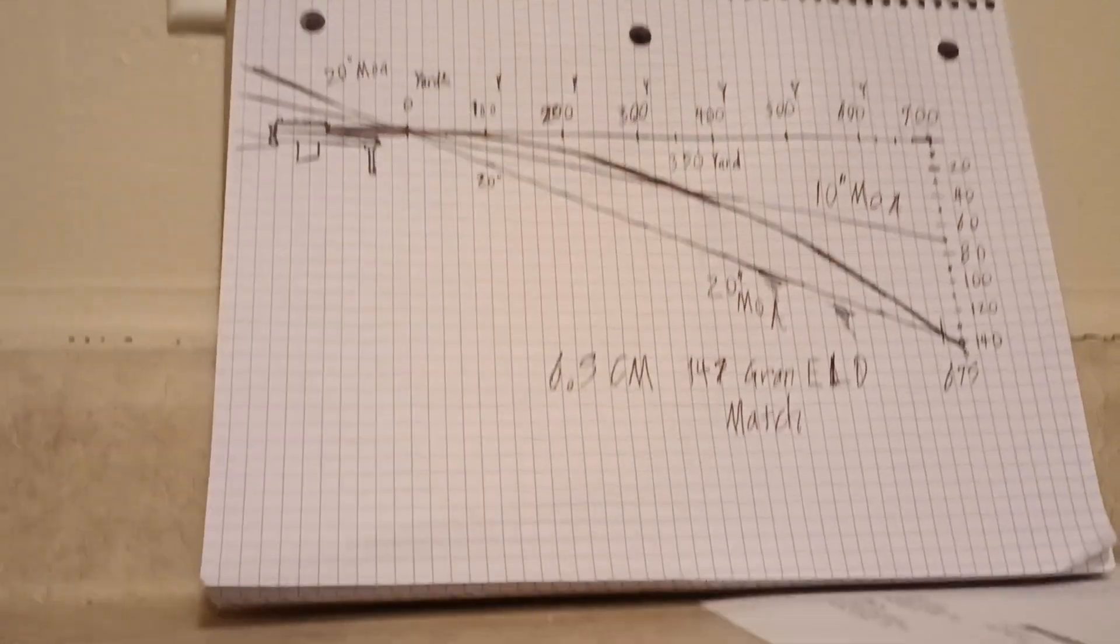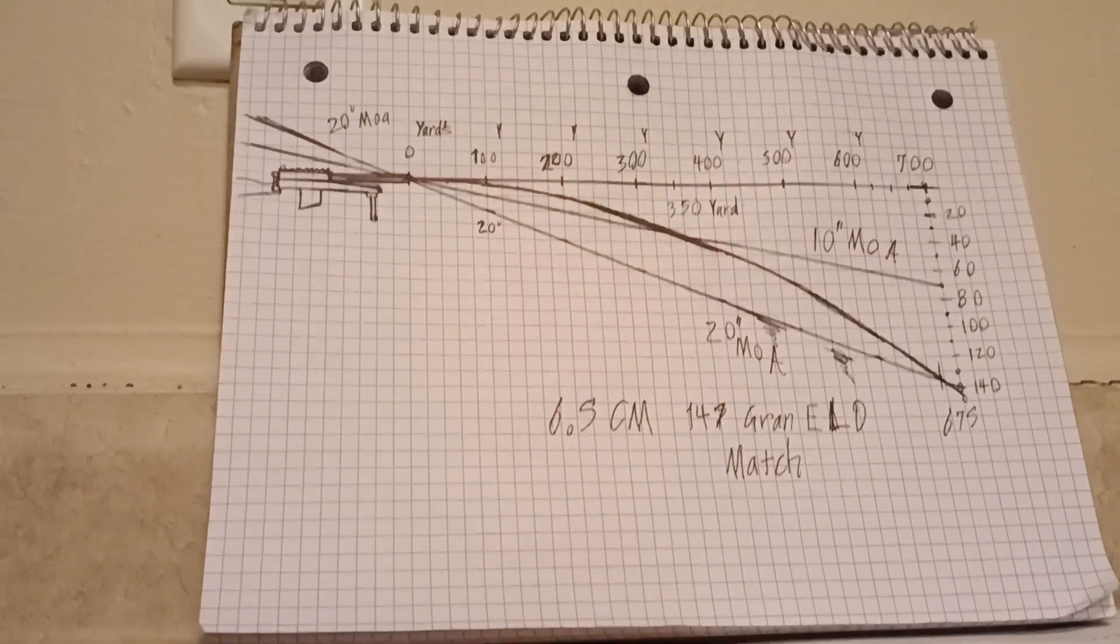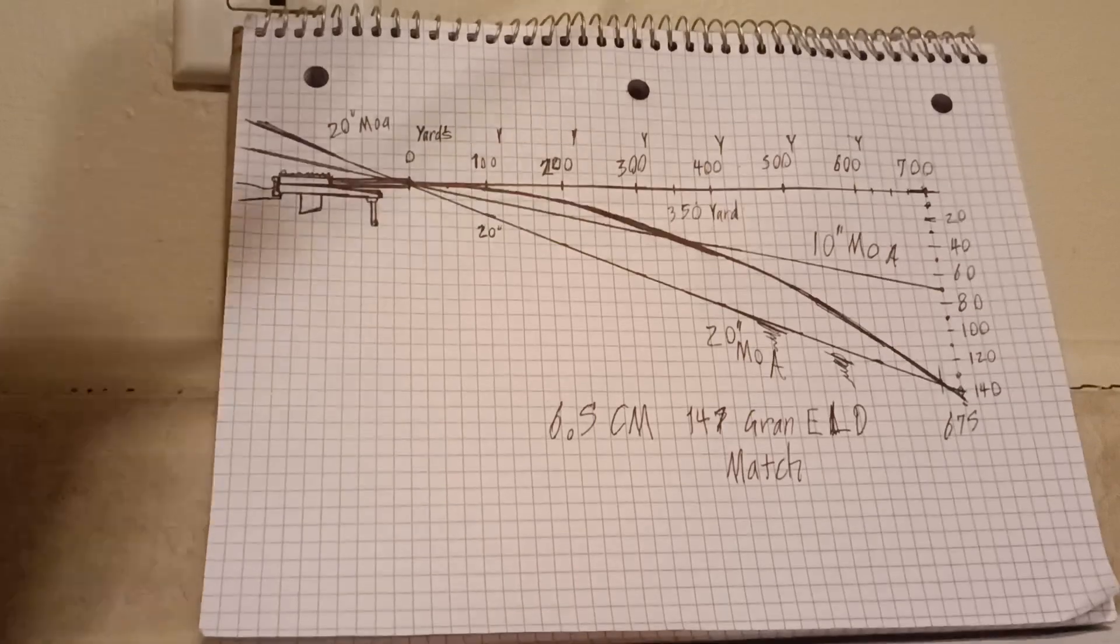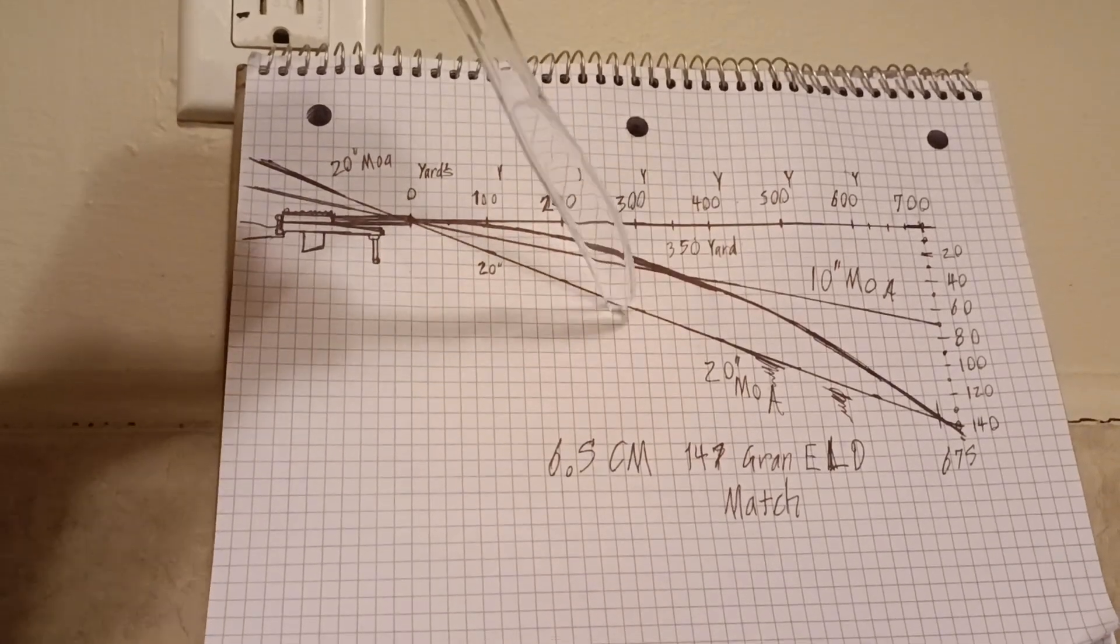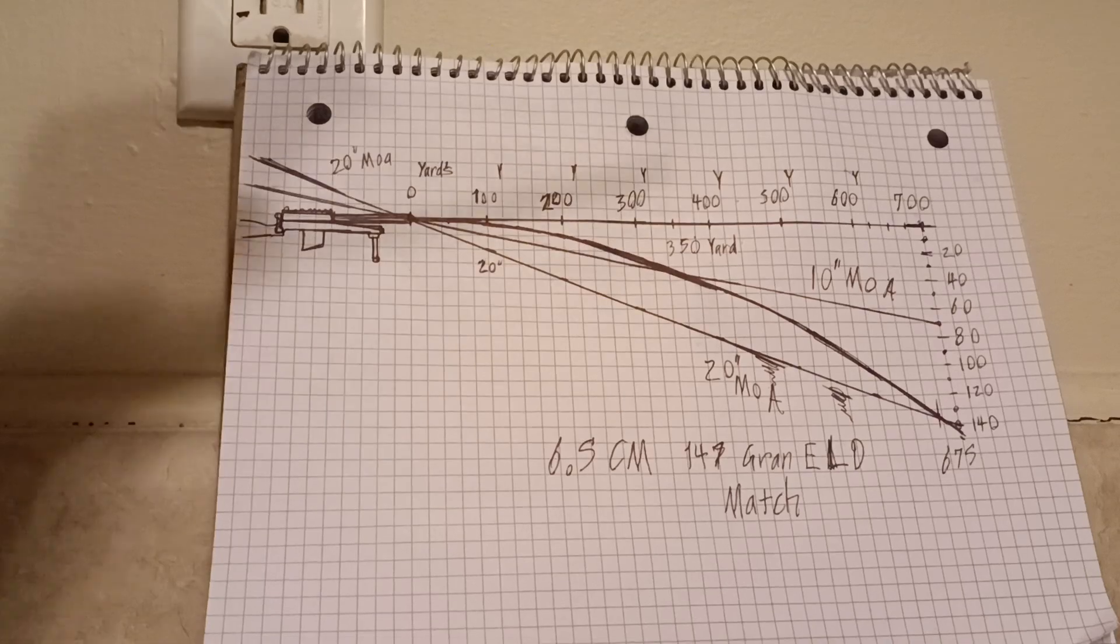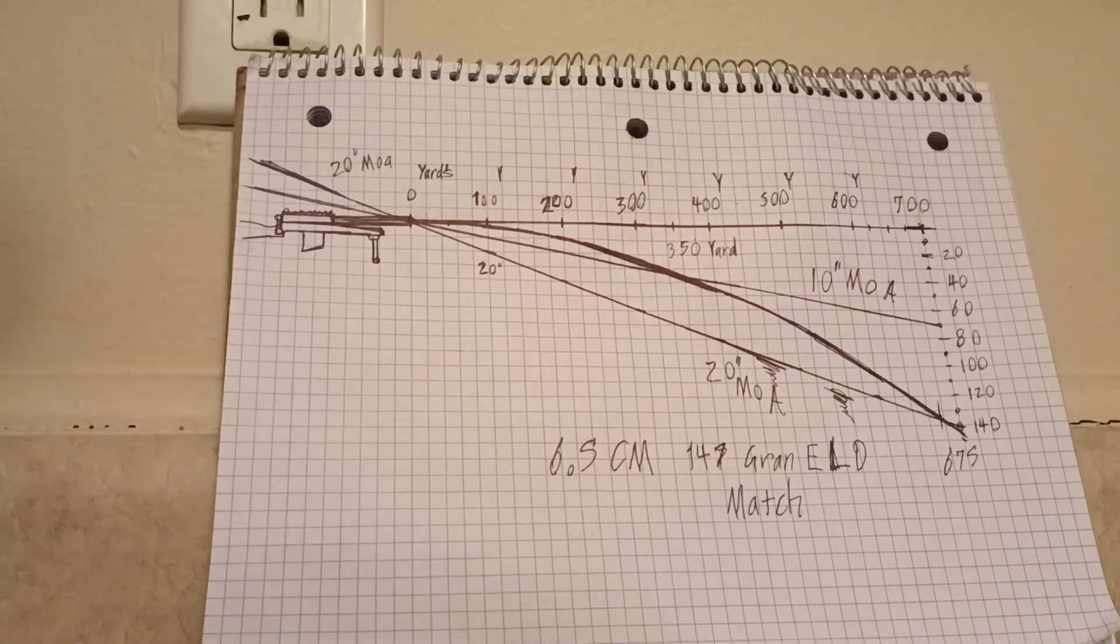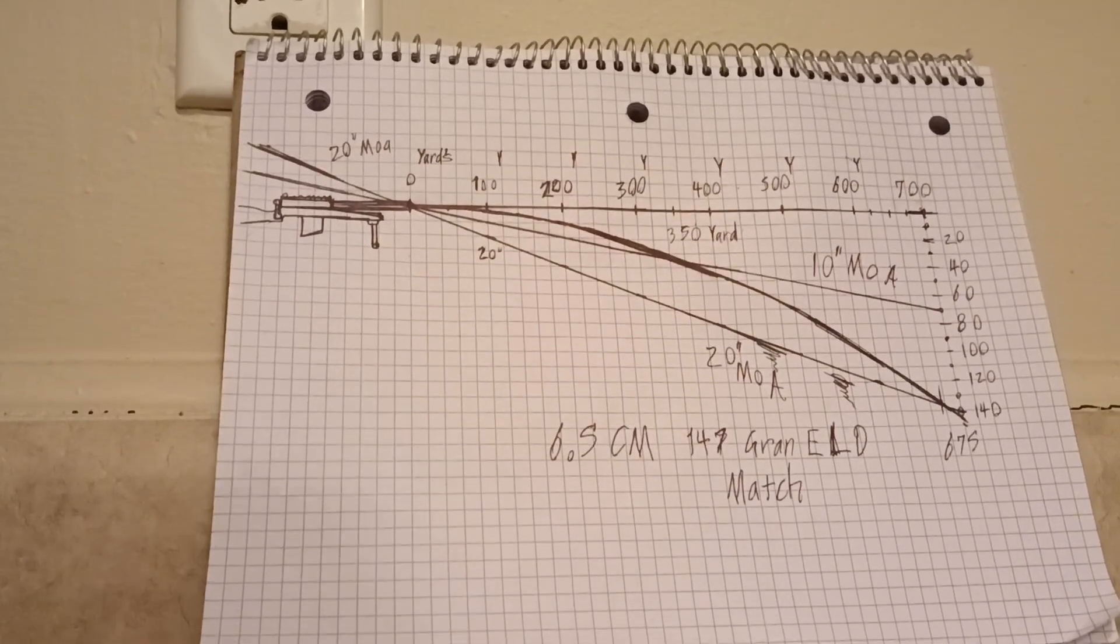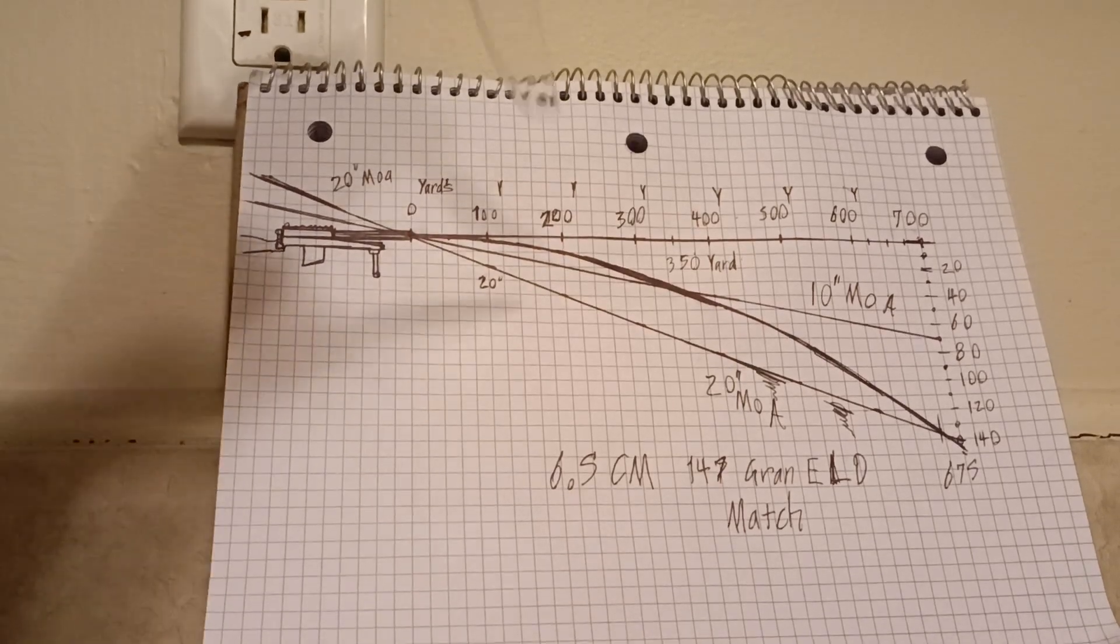That's actually how far a 20 MOA rail is pointing you down. What I also found interesting is when you actually look at how far a 20 MOA rail is pointing your scope down and where those points intersect.